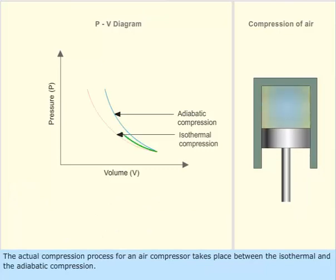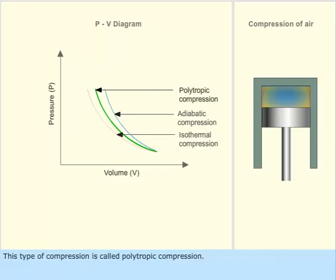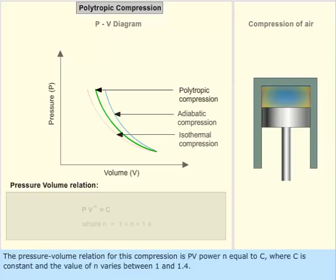The actual compression process for an air compressor takes place between the isothermal and the adiabatic compression. This type of compression is called polytropic compression. The pressure-volume relation for this compression is PV power N equal to C, where C is constant and the value of N varies between 1 and 1.4.